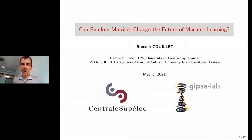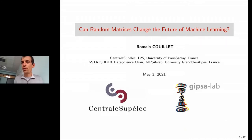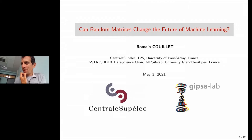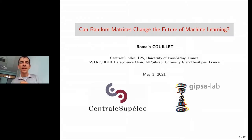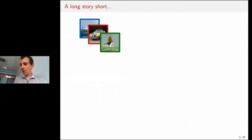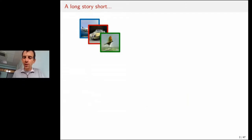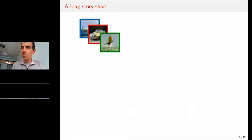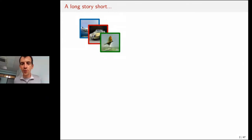I wanted this talk to be quite open and not extremely technical. We're going to talk about random matrices. The title is a bit provocative, and hopefully the answer is yes — meaning that if you're interested in machine learning and artificial intelligence, since you know random matrices, this is a perfect fit.